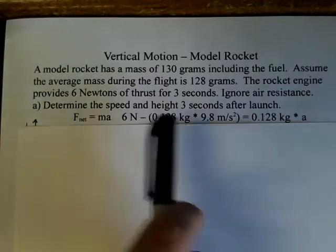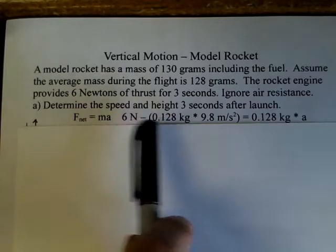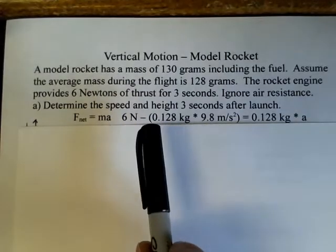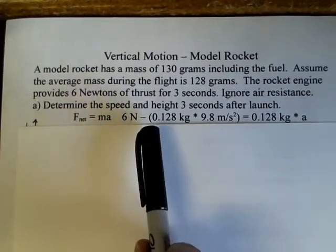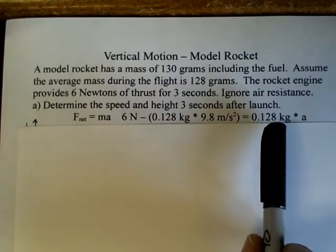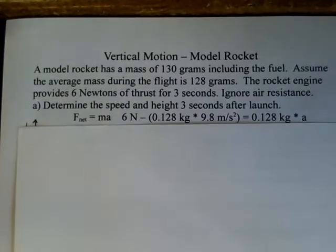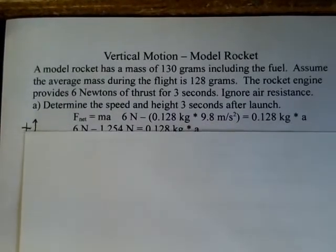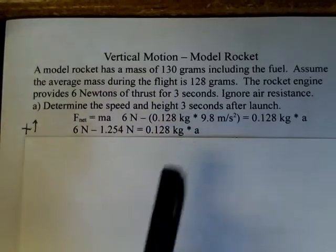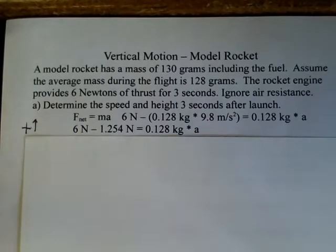The net force is the upward force minus the downward force. The downward weight is 0.128 kilograms times 9.8 meters per second squared, which equals 1.254 newtons. So we subtract those two forces — upward and downward — and since we're assuming constant mass, we'll get a constant acceleration. At the introductory physics level, we need this simplification; we're not going to use calculus here.